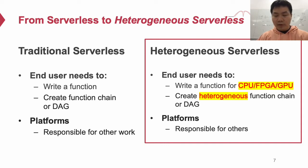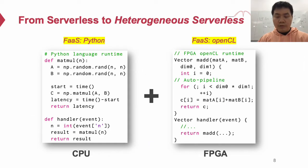Platforms are responsible for all others. The heterogeneous serverless system should follow the same principle. Specifically, it should allow end users to write functions not only for CPU but also for heterogeneous devices like GPU. Users should be able to connect functions on different devices. We show two cases for writing Python functions running on CPU and OpenCL functions running on FPGA. This programming model is simple and familiar to end users to utilize heterogeneous devices with serverless.